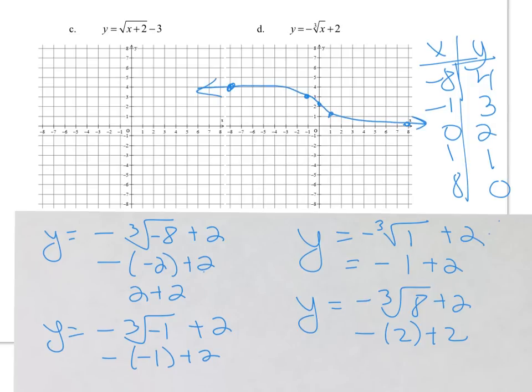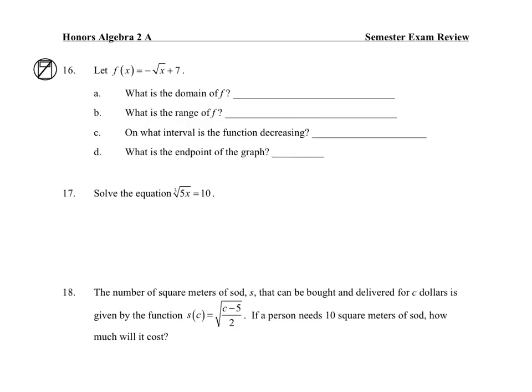You can also check your answers based on the transformations. This graph was moved up 2 and reflected over the x-axis. Here's our point of symmetry that was moved up 2, and it's been reflected.